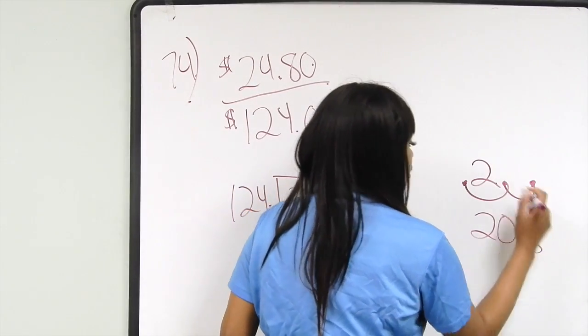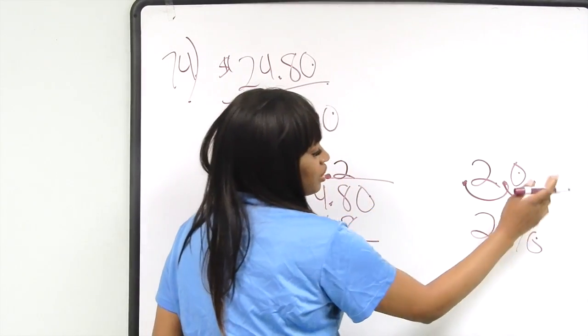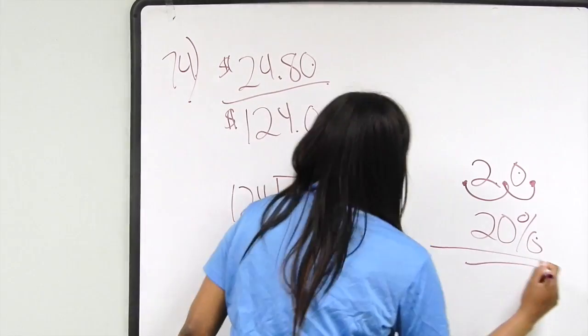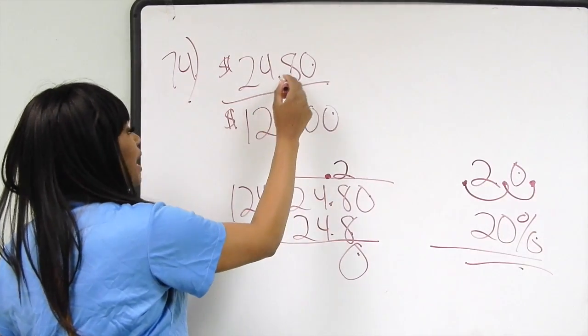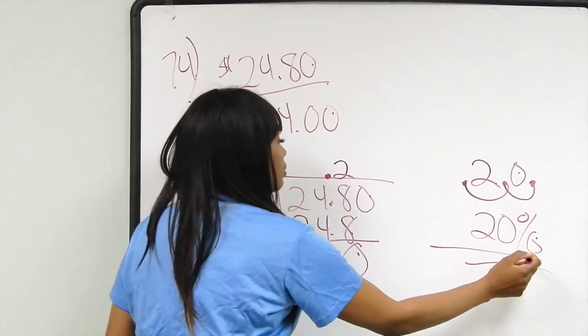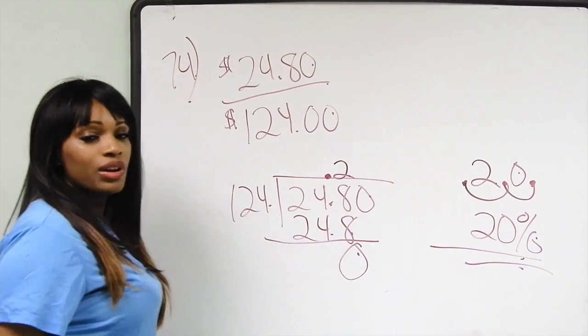You simply add a zero behind the two, and so $24.80 is 20% of $124.